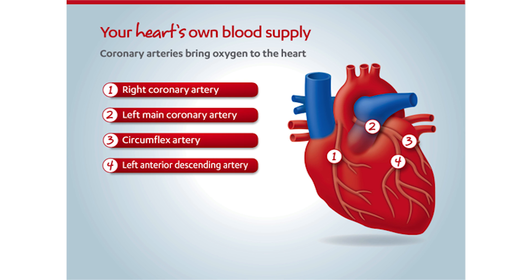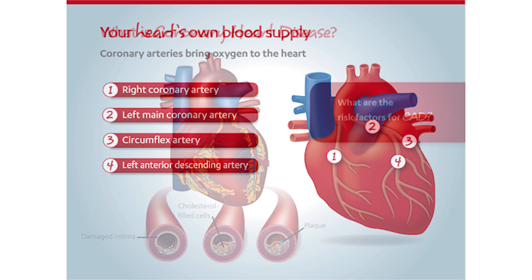These are the main coronary arteries. Each of these arteries also has smaller branches. The right coronary artery supplies blood to the back and underside of the heart. The left main coronary artery quickly divides into the left circumflex and left anterior descending arteries. The circumflex artery supplies the back or posterior of the heart, and the left anterior descending artery supplies the front or anterior of the heart, including most of the left ventricle.